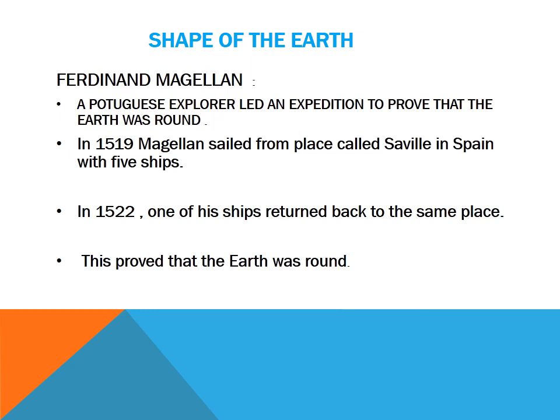To begin with, the shape of the earth. Children, you all know that the planet earth is our home. Initially people believed that the earth was flat. It was proved by several astronomers that the shape of the earth is round. Ferdinand Magellan, a Portuguese explorer, led an expedition to prove that the earth was round. In 1519 Magellan sailed from a place called Seville in Spain with five ships. In 1522 one of his ships returned back to the same place, which proved that the earth was round. The astronauts who have gone to space have also confirmed that the earth is spherical in shape.